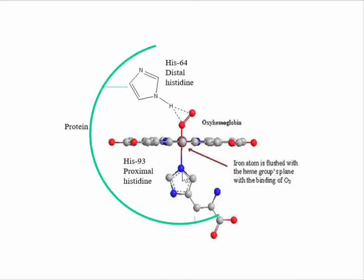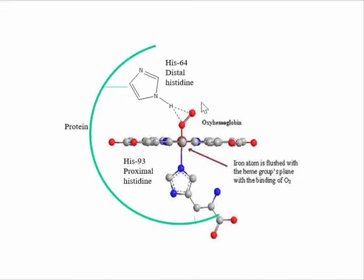Histidine 93 is directly attached to the iron center via its nitrogen atom. Histidine 64 (distal histidine) is not directly attached to the iron center but is attached to the oxygen molecule via hydrogen bonds. Because it is far from the iron center and not directly linked, it is called distal histidine. Upon oxygen binding, the iron moves into the porphyrin plane and oxygen is immediately hydrogen-bonded through histidine 64.